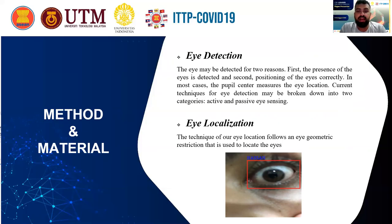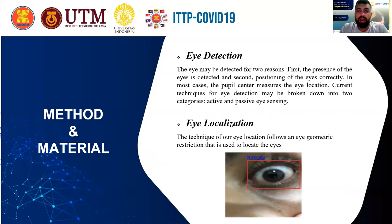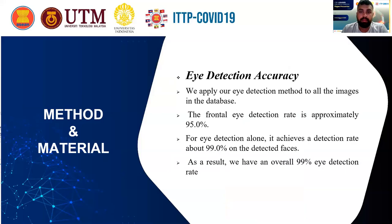Then after that, eye localization. The technique of our eye location follows eye geometric features that are used to locate the eyes. As shown in the slides, this photo was obtained from Python code that we worked with. Using the specific code, we could recognize the eye and identify the name of the specific eye based on the dataset included in the code. We are also able to apply the eye detection method to all images in the dataset or database.